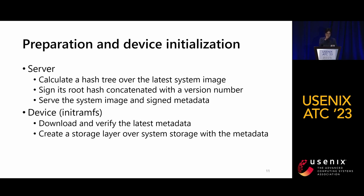APRON starts from the management server's metadata preparation. When the system image gets updated, the management server calculates a hash tree over the image. Then the management server signs the hash tree's root hash value, which is concatenated with a monotonic version number to prevent rollback attacks. The management server then serves the system image and signed metadata through various deployment channels. Once ready, the APRON device can boot normally with recovery activities. In particular, the APRON device relies on a minimal boot environment known as Linux initramfs to download and verify the latest metadata if available. Using this APRON metadata, the device creates a storage layer over the system storage to interpose every access.